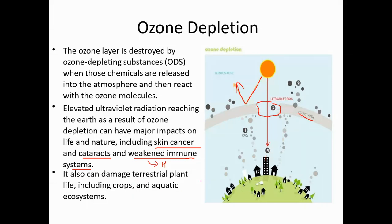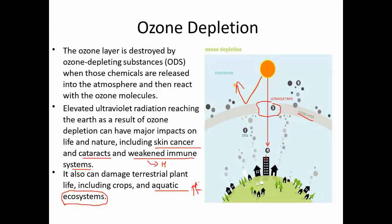Ozone layer depletion also damages terrestrial plant life — plant growth is affected. Aquatic ecosystems are also affected because UV rays heat up the water, making life much more difficult in oceans or any aquatic system. These are some of the harmful effects, which is why we need to protect our ozone layer.